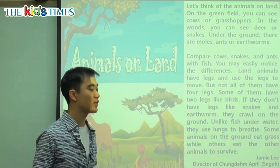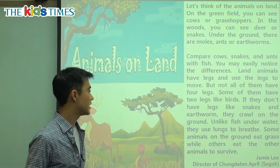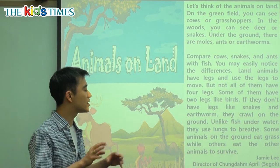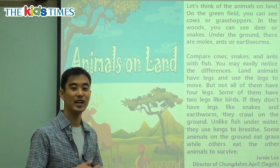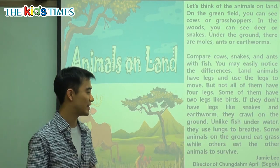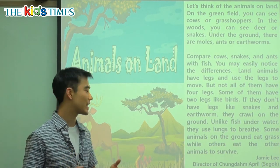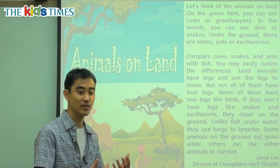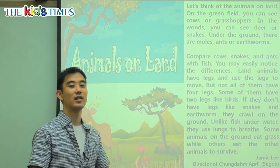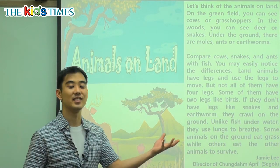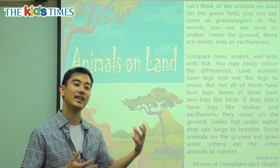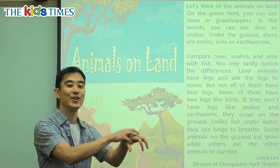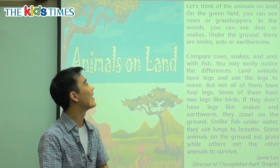Some animals on the ground eat grass — they eat the grass — while others eat other animals to survive. Some animals, like deer and cows, eat plants. But other animals, like cheetahs or lions, eat other animals. They have to catch other animals and eat them.